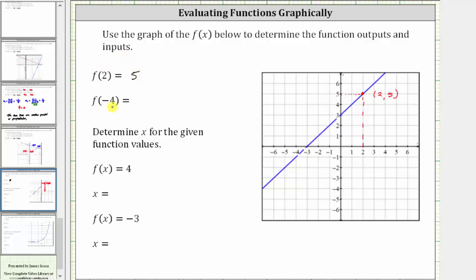Next, we want to determine f of negative four. The input or x value is negative four. Here is negative four on the horizontal or x axis. So we go down to the graph to find the point where the input or x value is negative four. The corresponding output or y value is negative one. When the input is negative four, the output is negative one, and therefore f of negative four is equal to negative one. Remember, function values are y values or outputs.